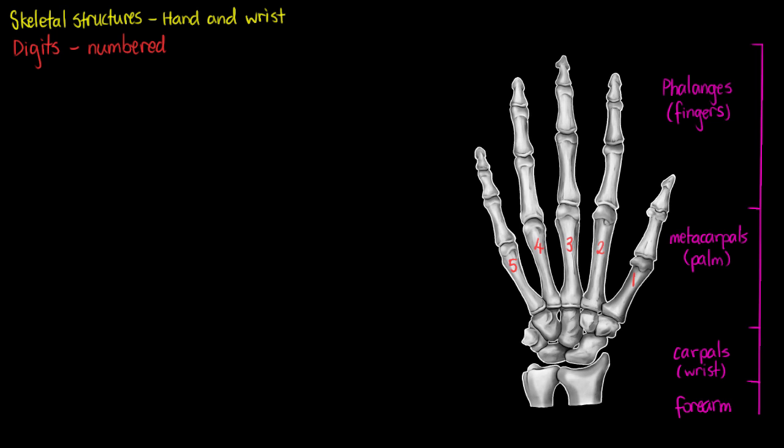If we start with our phalanges, we're going to divide it into three different segments based on their distance away from our wrist or palm. The first segment is the proximal. I'll just highlight in green here. So our proximal phalanges, the first bone of our fingers.